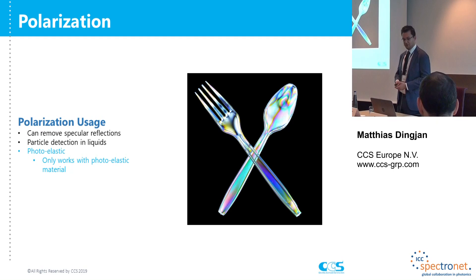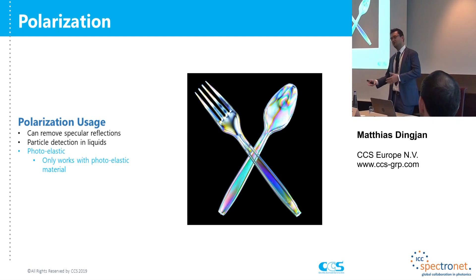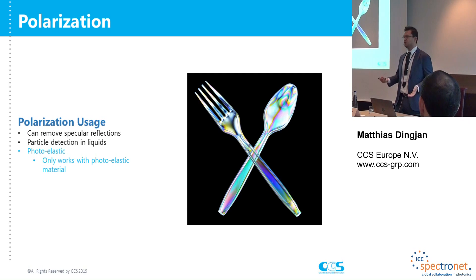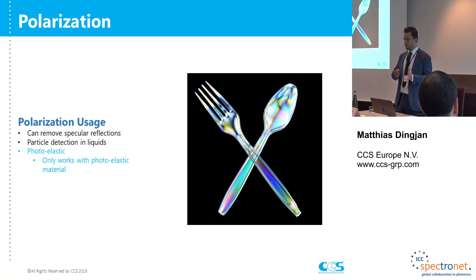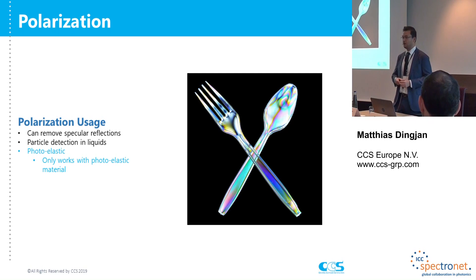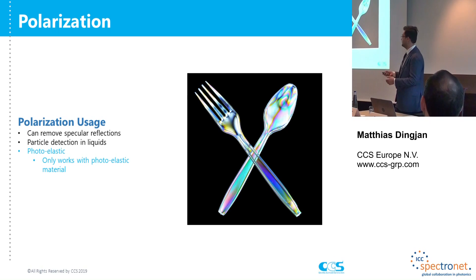The final example I'd like to discuss is photoelasticity, and to explain that I need to talk about birefringence. Birefringence is an effect exhibited by certain transparent materials where light enters the material and gets refracted twice by polarization, producing two different refraction angles and two components. One of those components takes longer to pass through the material due to its different refraction angle, and as soon as both components exit the material, you have a phase shift between them.